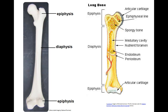The epiphyseal line is a remnant of the epiphyseal plate, which is commonly referred to as the growth plate. The plate is a disc of hyaline cartilage that grows during childhood in order for the bone to lengthen. The medullary cavity stores adipose or fat tissue in adults, referred to as yellow bone marrow. Endosteum is a delicate connective tissue that lines the medullary cavity.